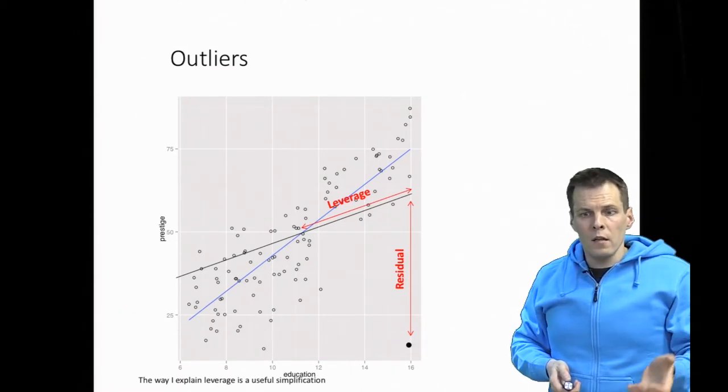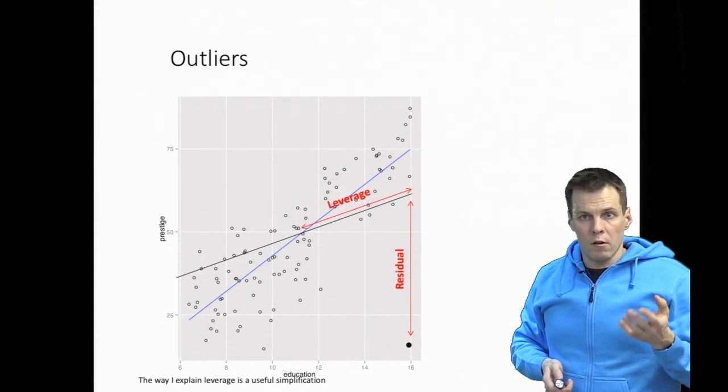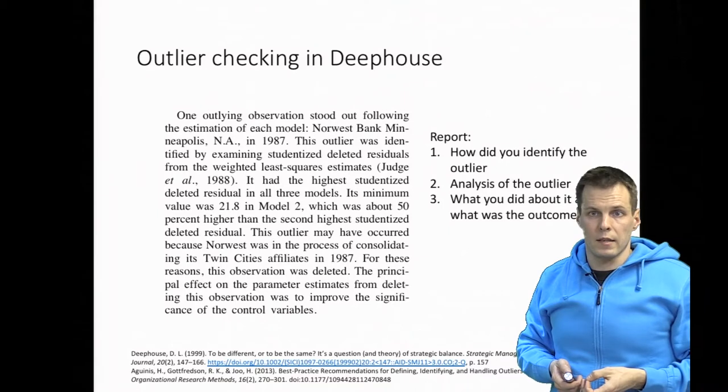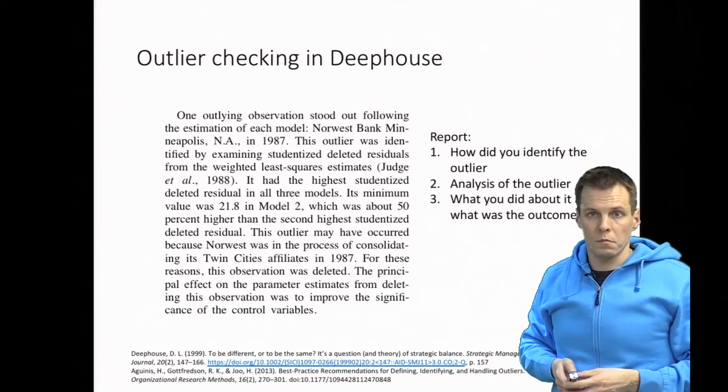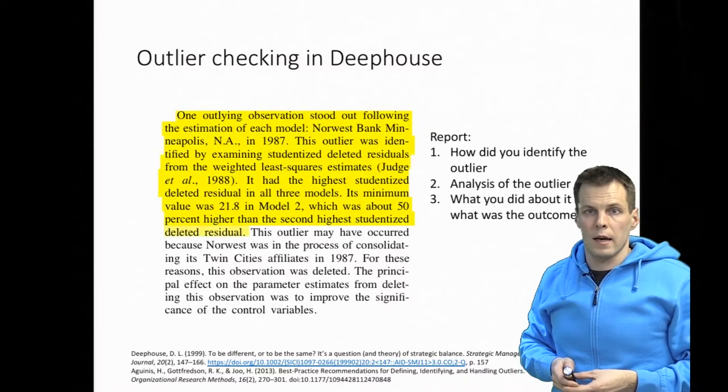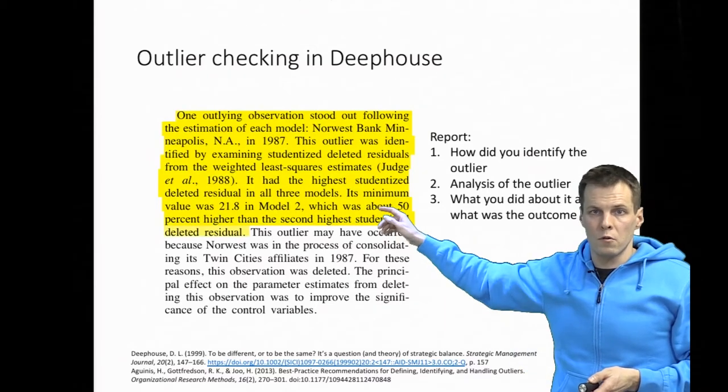When we identify outliers, there are three important steps in the process, and Deep House's article is a really great example of how you deal with outliers. First, you report how you identify the outliers. Deep House used residuals.